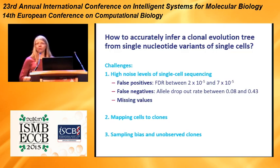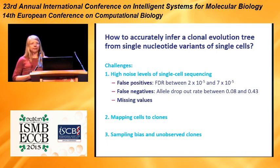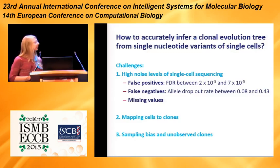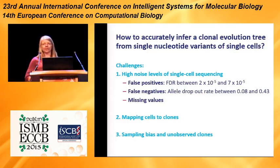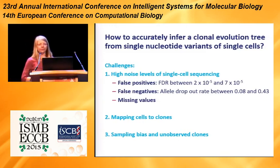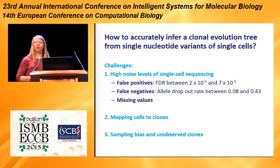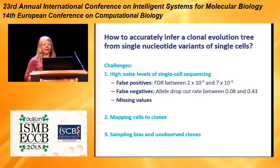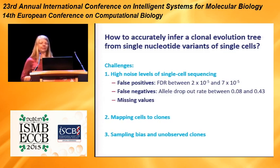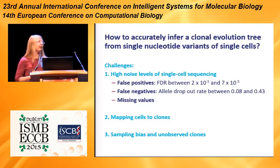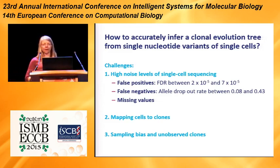As a previous speaker pointed out, this seems like a really simple task because we don't have the problem of bulk sequencing where we have to deconvolve the mixed signal. But single cell sequencing comes with its own challenges, mainly the high noise levels, which includes both false positives and false negatives as well as missing values. The false discovery rates of single cells are in the order of 10 to the power of minus 5, meaning the number of false positives can easily outnumber the true positives. Allele dropout rates have been estimated to lie between 8 and 43 percent, and published datasets sometimes have missing values of more than 50 percent.